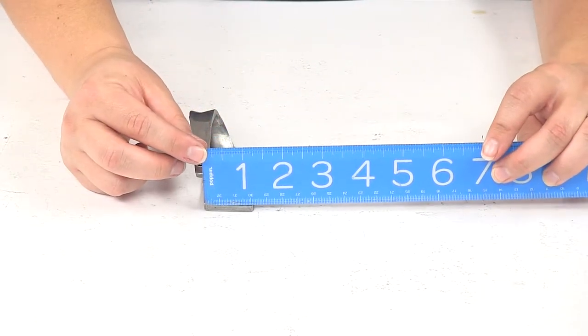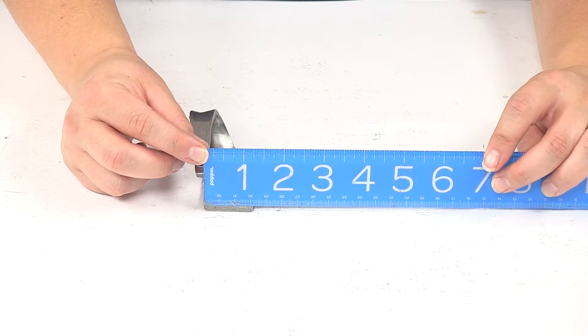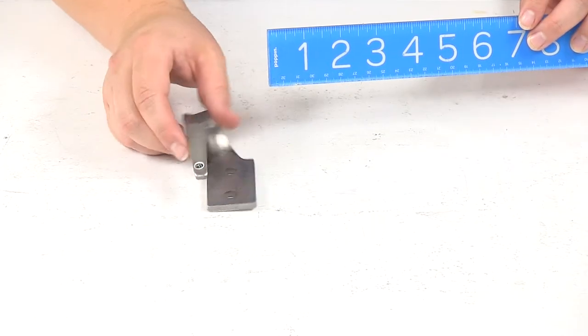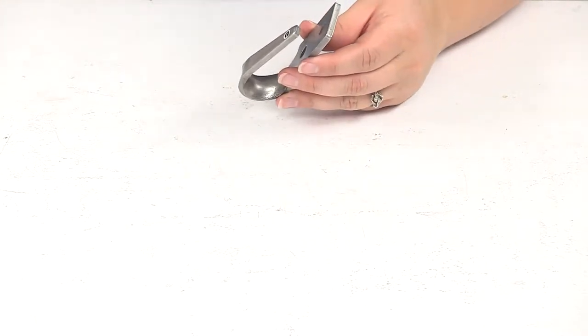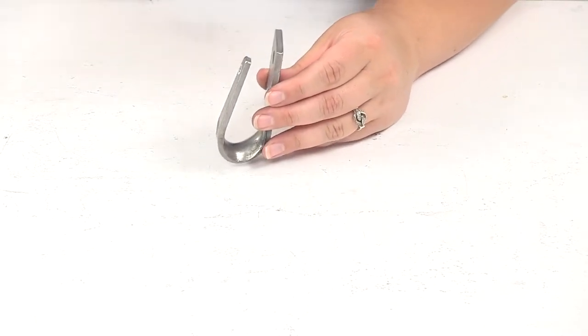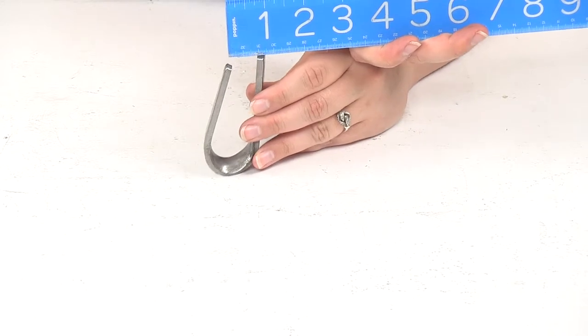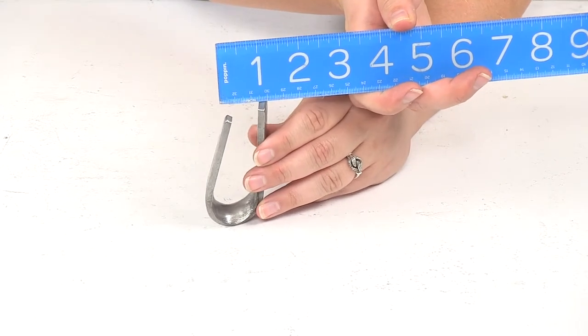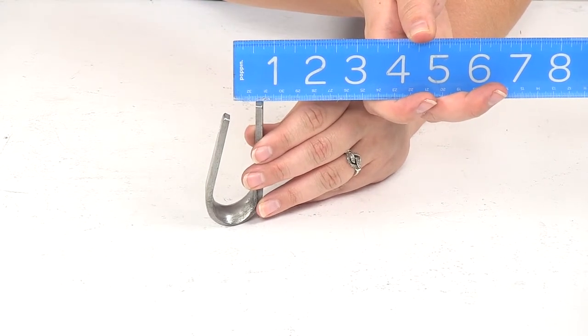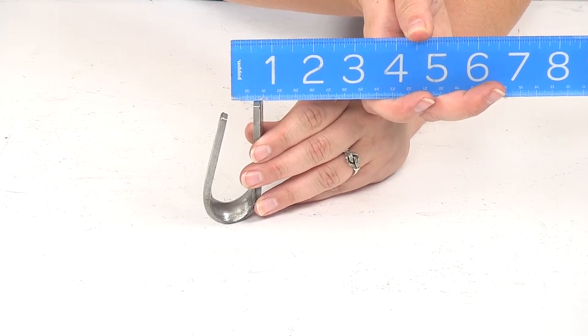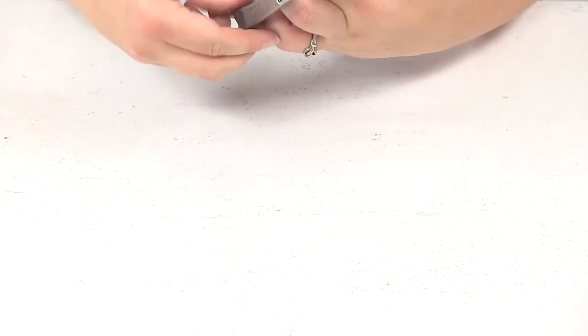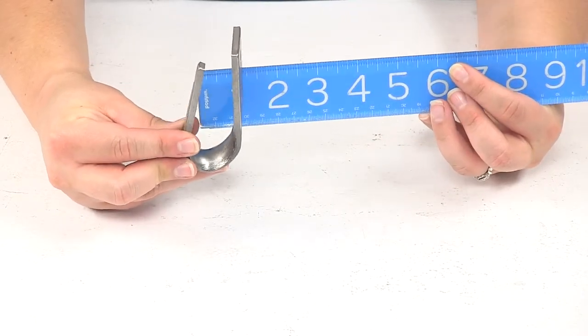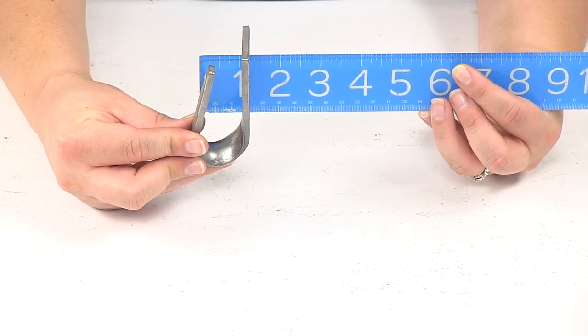As far as the width at that mounting plate, it's about one and a quarter inches. The space at the top of that hook opening is going to be about three quarters of an inch, or half an inch. At the widest it's going to be about an inch.